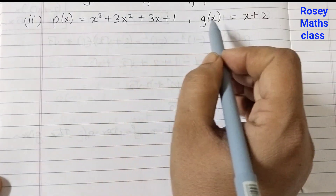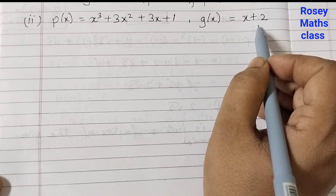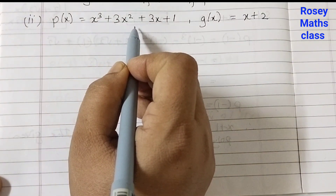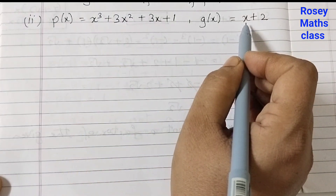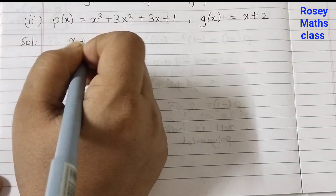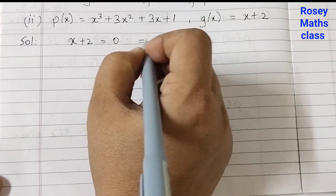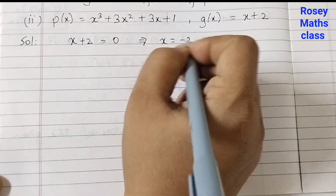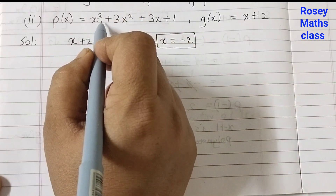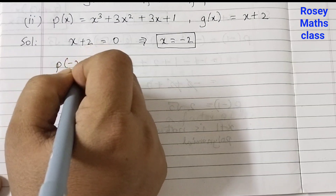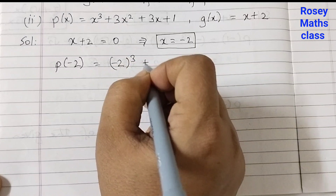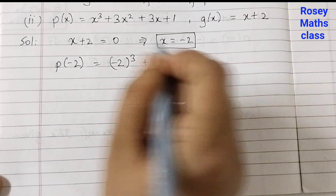Part 2: p(x) = x³ + 3x² + 3x + 1, and g(x) = x + 2. We need to check whether x + 2 is a factor of the given polynomial using the factor theorem. First we find the zero: x + 2 = 0, which implies x = −2.